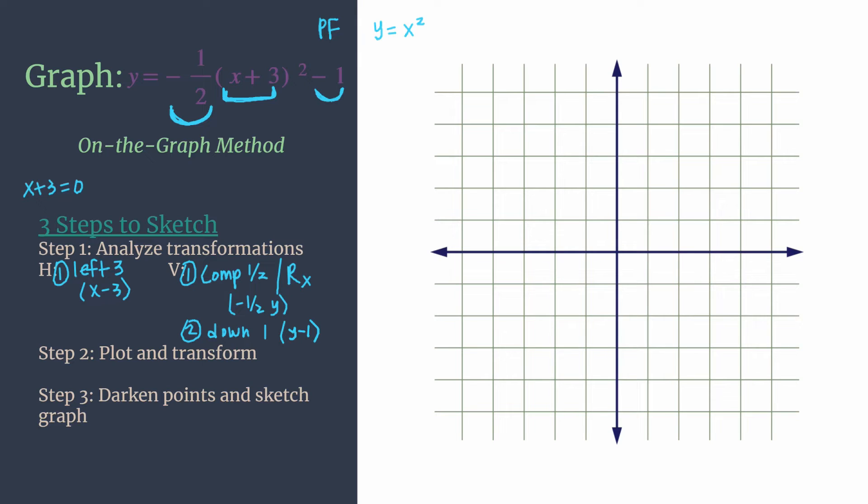So let's plot our parent function. So we know it's the u. And we know that our three points closest to the origin are these three, negative one one, zero zero, and one one. And now we can transform. And remember, it's really helpful to have several different colors so that you can have your intermediate graphs marked very clearly and neatly.